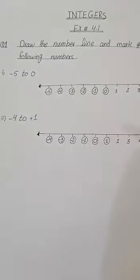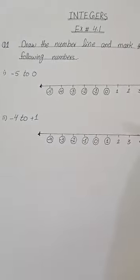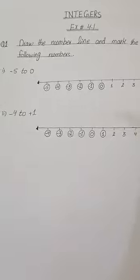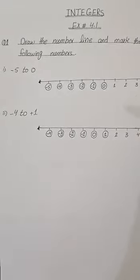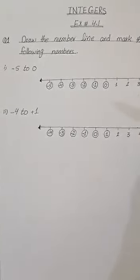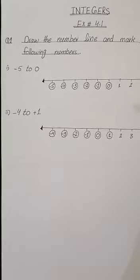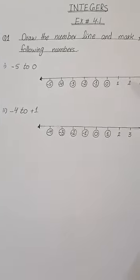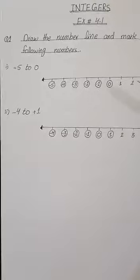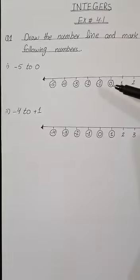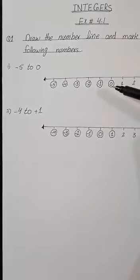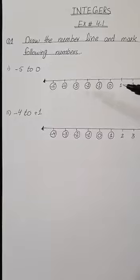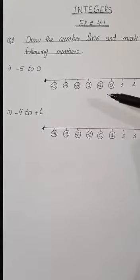From this topic we will start exercise 4.1. Our question number 1 is: draw the number line and mark the following numbers. First of all, you have to learn about the number line. We have to draw the number line with the help of a scale. 0 is a starting point, and it's easy to remember that the right hand side of 0 has positive numbers and the left side of 0 has negative numbers.